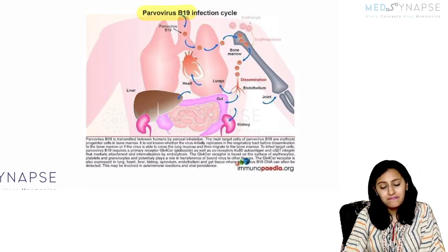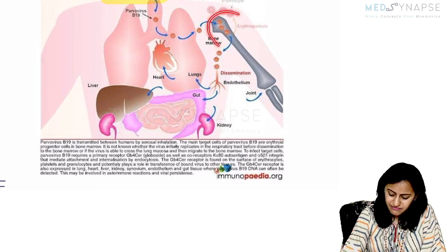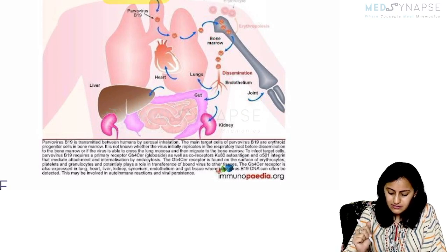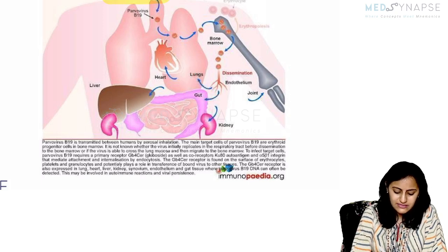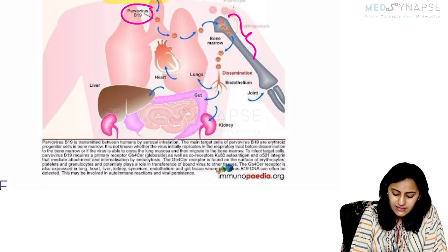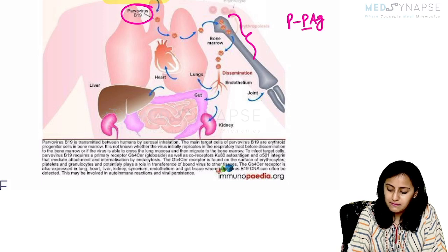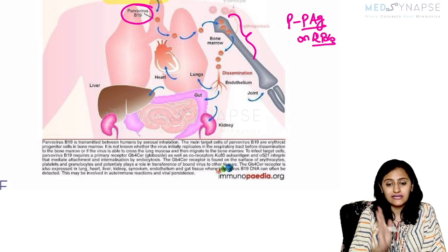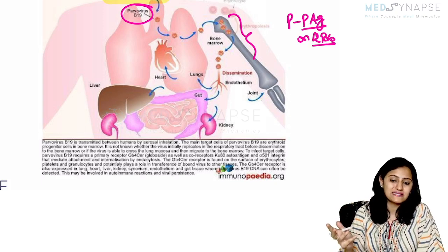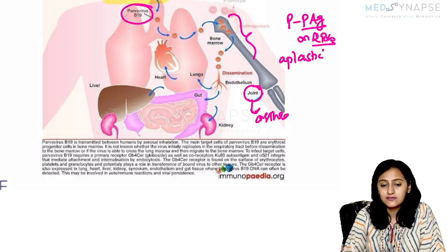Parvovirus B19 was asked in a recent exam. When you are shown a virus life cycle affecting the bone marrow — along with lungs, gut, kidney, and liver — especially when the bone marrow is specifically highlighted, think Parvovirus B19. Parvovirus binds to the P antigen on RBCs, leading to red cell aplasia or aplastic crisis. It also affects joints, causing arthralgia.